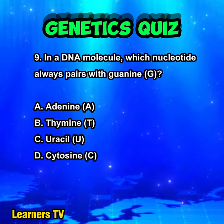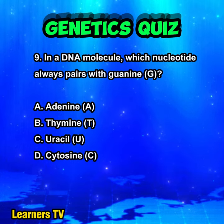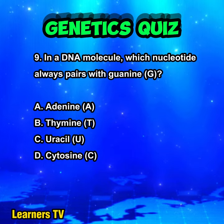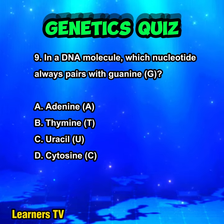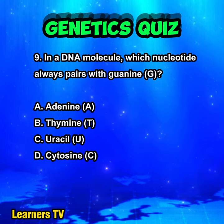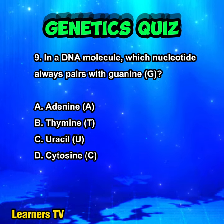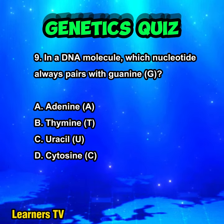In a DNA molecule, which nucleotide always pairs with guanine (G)? A. Adenine (A). B. Thymine (T). C. Uracil (U). D. Cytosine (C).